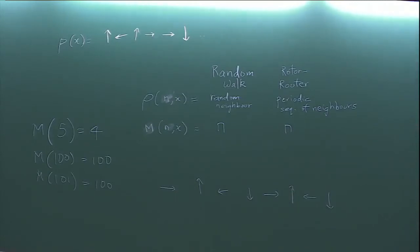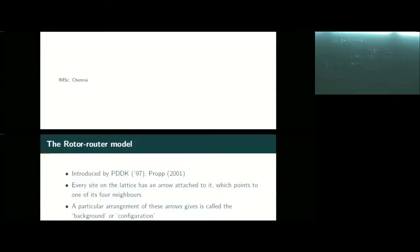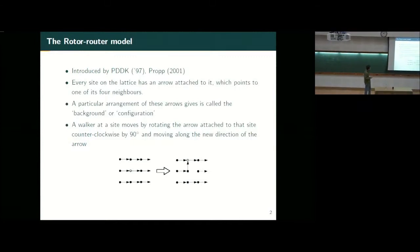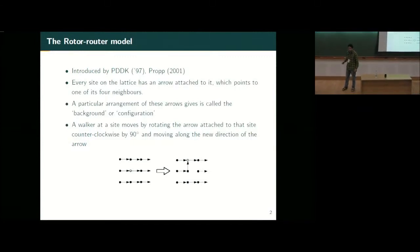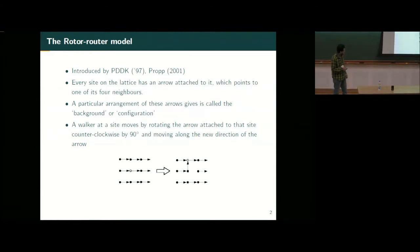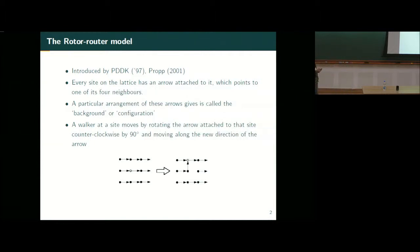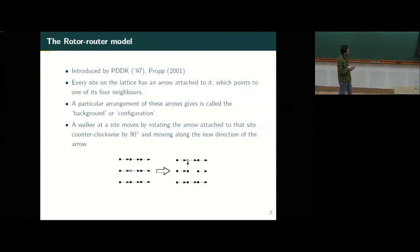I'll be studying the rotor-router on a 2D square lattice. There's a nice graphical way of defining the model: every lattice site has an arrow attached to it that points to one of the neighbors — that's the current state of the stack. If I put a walker at a site, it rotates this arrow by 90 degrees and then moves in the new direction. This was introduced by Priezzhev, Deepak, Abhishek, and Supriya Krishnamurthy in 1997 in the context of SOC, and by James Propp in the de-randomized random walk context.